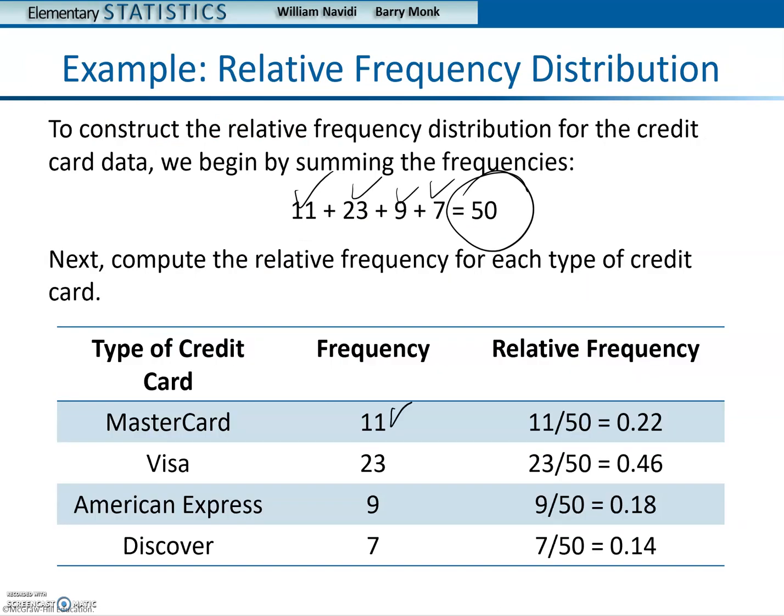Then they take 11 divided by 50 and they get 0.22. Notice this is as a decimal number. 23 divided by 50 is 0.46, 9 divided by 50 is 0.18, and 7 divided by 50 is 0.14. Those are the relative frequencies.